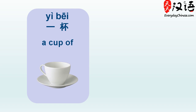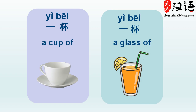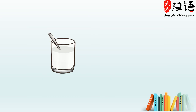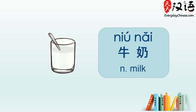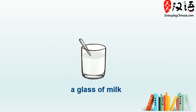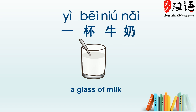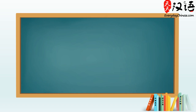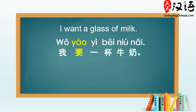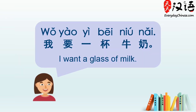一杯 not only means a cup of, but also means a glass of. For example, to say a glass of milk — milk in Chinese is 牛奶. So a glass of milk is 一杯牛奶. Now say I want a glass of milk: 我要一杯牛奶.